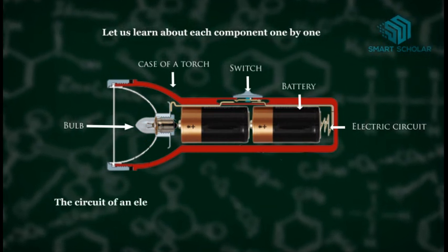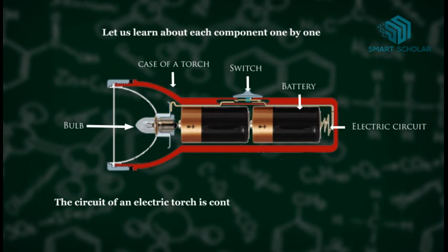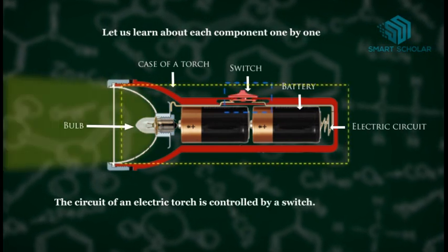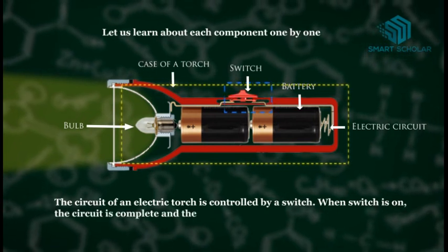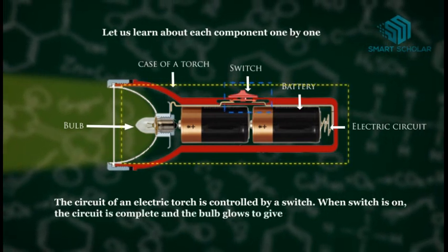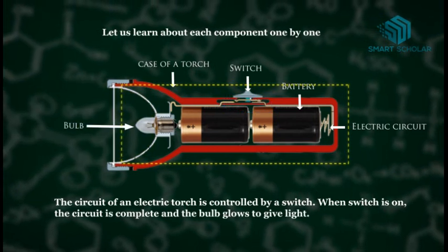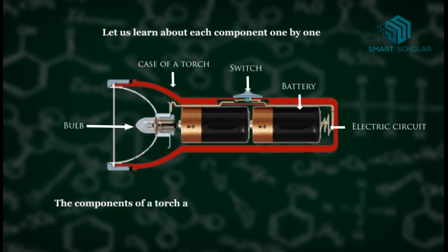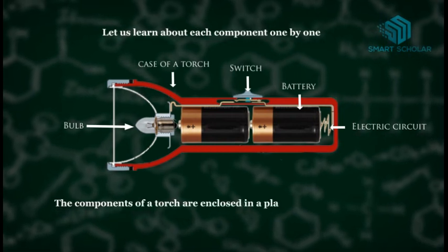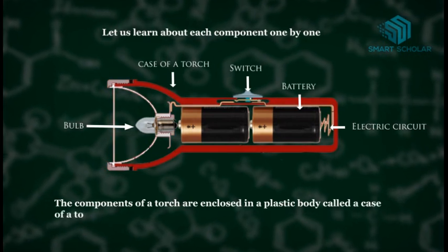The circuit of an electric torch is controlled by a switch. When switch is on, the circuit is complete and the bulb glows to give light. The components of a torch are enclosed in a plastic body called the case of a torch.